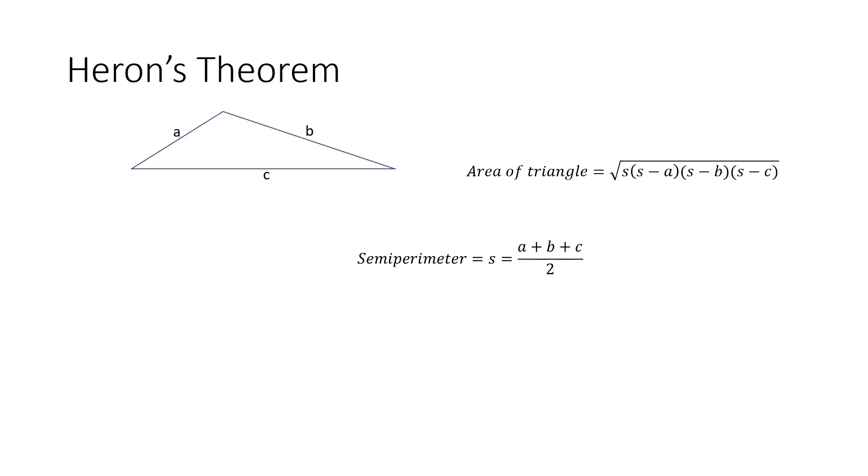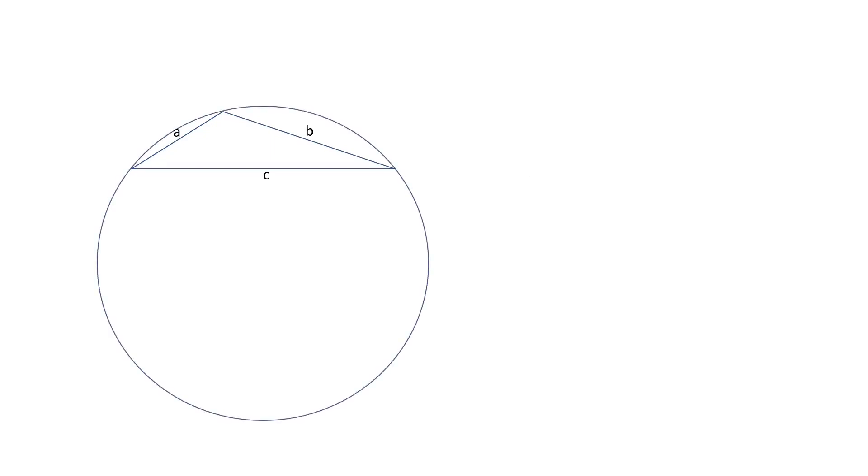So for our third bit of information, it turns out that for every triangle, there is a unique circle that goes around that triangle and touches all three vertices, which we call the circumcircle. And we can calculate its radius and its diameter from this formula.